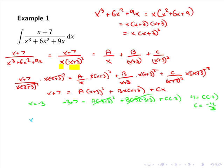Whereas if we pick x equals 0, we have 0 plus 7 equals a, 0 plus 3 squared plus b, 0, 0 plus 3 plus c times 0. So now c and b both cancel out and we are left with 7 equals 9a, or a equals 7 over 9.